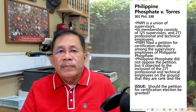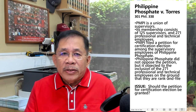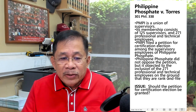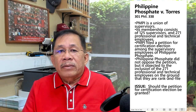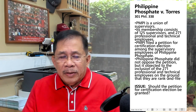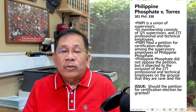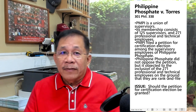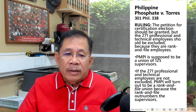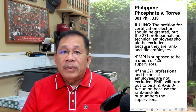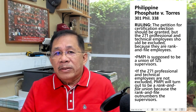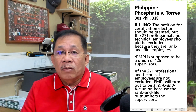In the case of Philippine Phosphate, the union of supervisory employees had a membership consisting of 125 supervisors and 171 professional and technical employees. The union filed a petition for certification election among the supervisory employees. Philippine Phosphate did not oppose the petition but objected to the inclusion of 271 rank-and-file employees. The Supreme Court ruled that the petition should be granted, but the 271 rank-and-file employees should be excluded because they cannot validly join a union composed of supervisors.